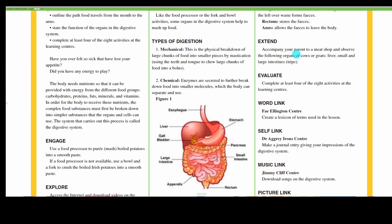Extend. Accompany your parents to a meat shop and observe the following organs of a cow or goat: the liver, the small and large intestines, and we sometimes call those tripe.